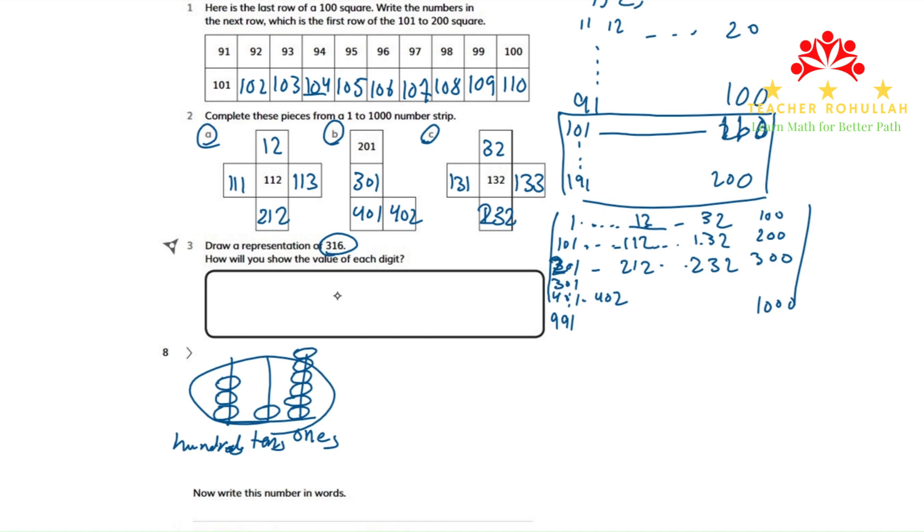The value, we can use place value to show the value of the number three hundred sixteen. Six is in the ones place, one is in the tens place, and three is in the hundreds place. The value in the ones place is one, so six in the ones place will have the value of six. The value in the tens place is ten, so one in the tens place will be ten. And the value in the hundreds place is hundred, so three in the hundreds place will be three hundred.